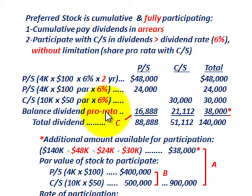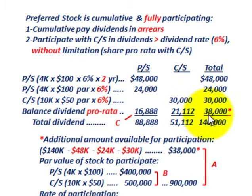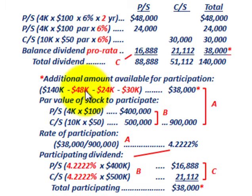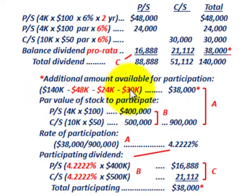This $38,000 balance is a dividend on a pro-rata basis — we're going to calculate it as $16,888 for preferred stock and $21,112 for common stock. The $38,000 is the additional amount available for participation: $140,000 total less $48,000 for preferred arrears, less $24,000 current preferred dividend, less $30,000 to common stock, gives us that $38,000 remaining amount.